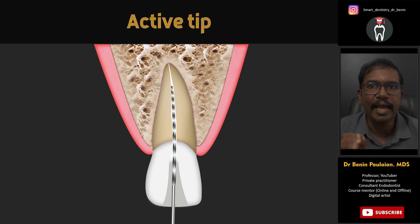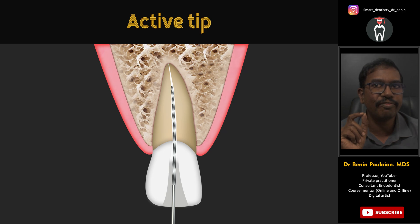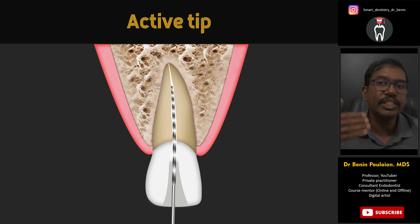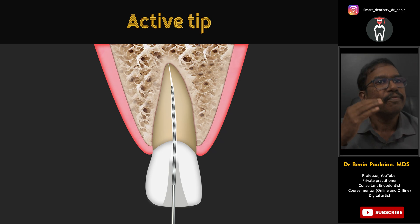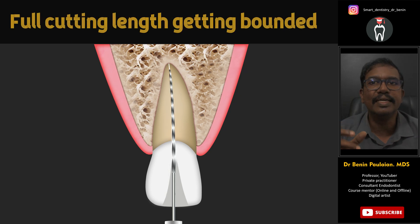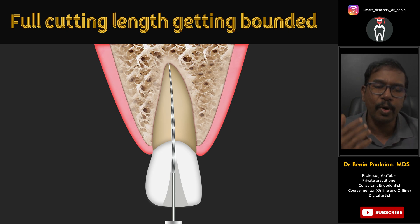We have to understand that whenever we are using a hand file, almost all hand files will have a tip which is active. An active tip means it is sharp, and if you are rotating a file inside the root canal it will get binded — that is how we enlarge, negotiate, and do cleaning and shaping. Whenever this active tip file, for example a stainless steel K hand file, is threaded inside the root canal by doing a rotation, the file will get bounded.